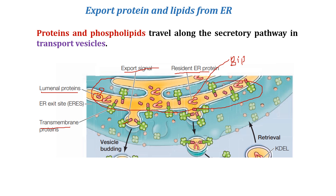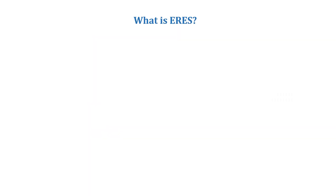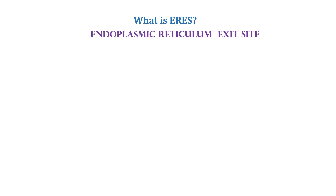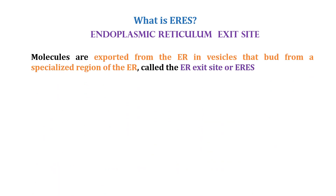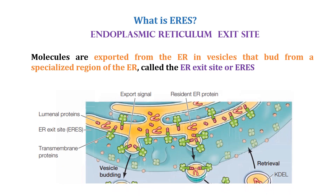What is the ERES? The endoplasmic reticulum exit sites, or ERES, are special regions of the ER from which protein molecules are exported in vesicles that bud from the ER. This site is where the vesicles bud and form.